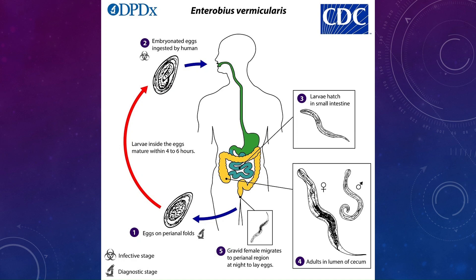Life cycle of Enterobius vermicularis: the eggs present on the perianal folds of an infected person are ingested by the same human through self-inoculation. After ingestion, the egg reaches the small intestine and larvae hatch from the egg. The larvae become adults in the lumen of the cecum, and these adults again lay eggs which reach the perianal folds, thus completing the cycle.